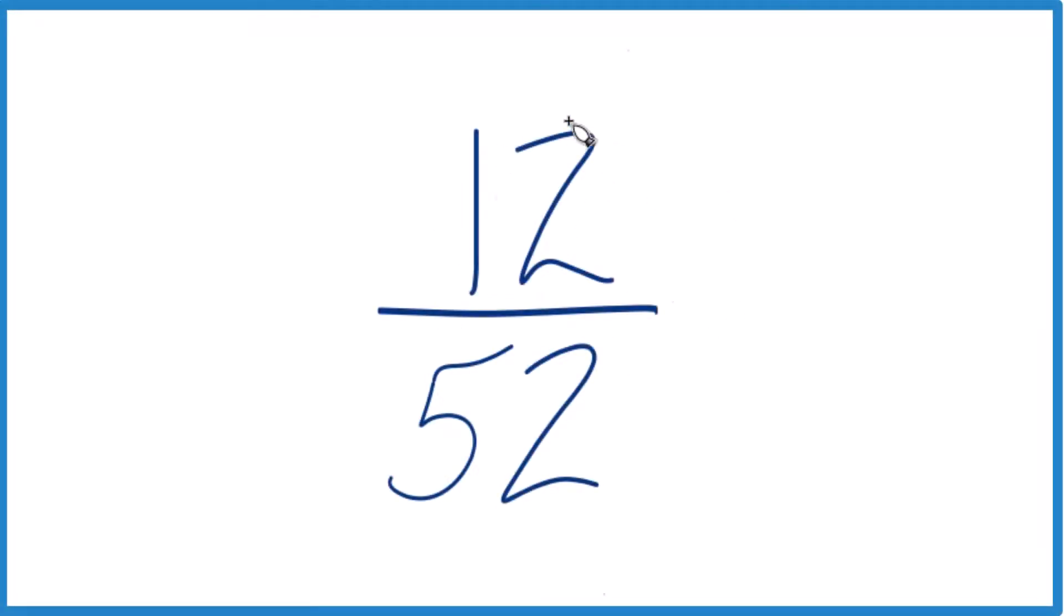Okay, let's simplify the fraction 12/52. So how do we get this down to lowest terms in its simplest form? They're even numbers, so let's do that first.